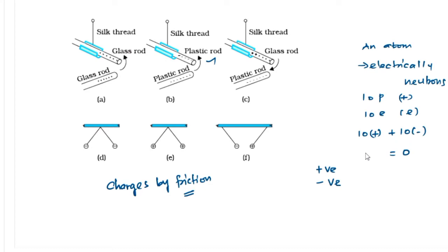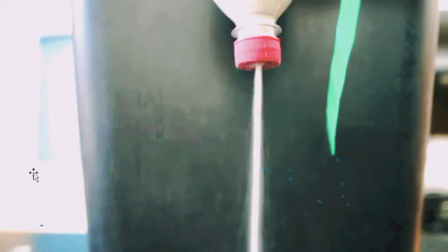Similarly, take a plastic rod. If it is rubbed with fur material, on friction this plastic rod will acquire negative charges. If you bring the plastic rod nearby another negatively charged plastic rod, you get a repulsive force. Whereas if the positively charged glass rod is brought nearer to the negatively charged plastic rod, they will attract. Two negative charges repel each other, two positive charges repel, but positive and negative charges attract.